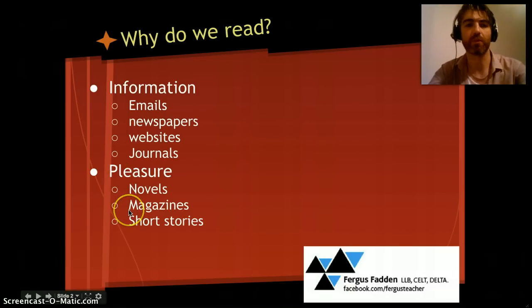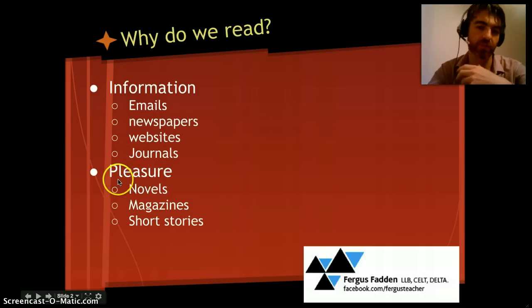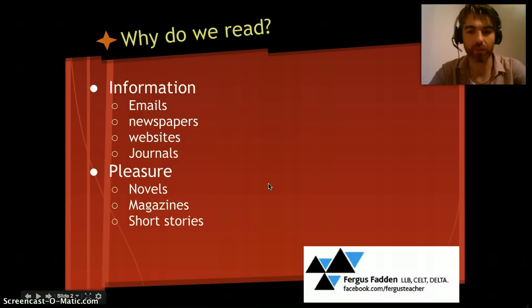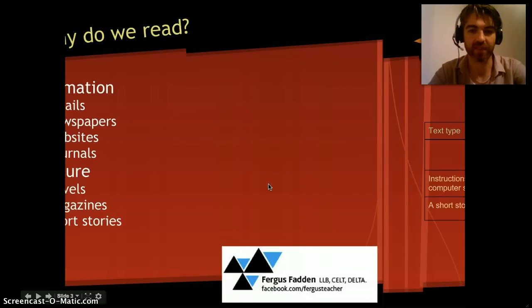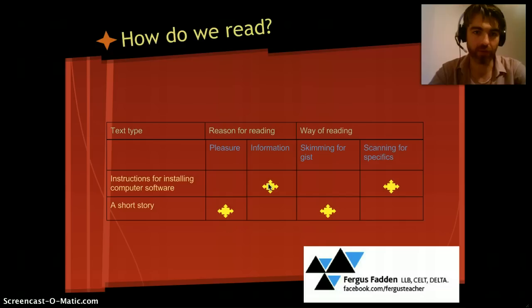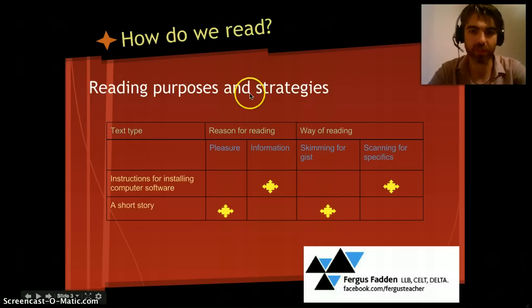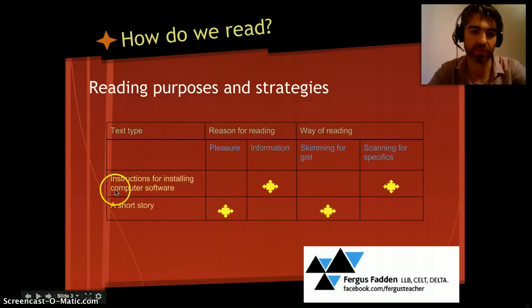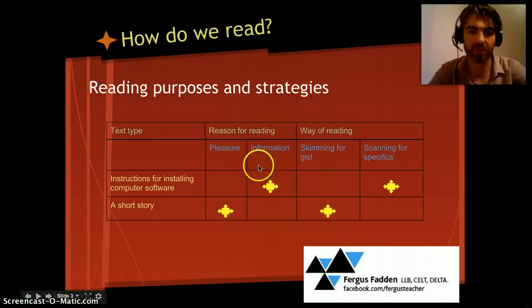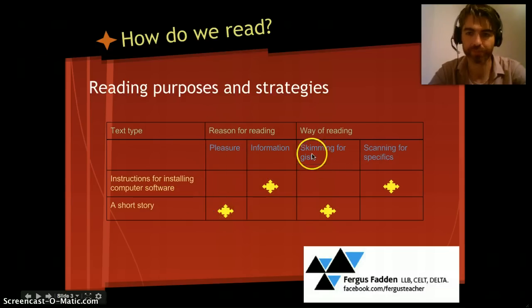When we consider our feelings while reading these different types of texts — whether for pleasure or information — we can also consider that in some ways we read slightly differently depending on the text. So how do we read? Let's look at some reading purposes and strategies. On the left side here I have two types of text: instructions for installing computer software, and a short story. The instructions are clearly read for information, and the short story clearly for pleasure.